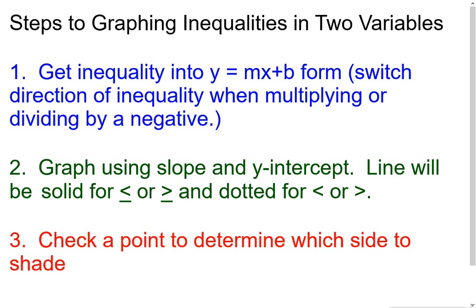Now for graphing inequalities. The beginning is similar to graphing a line. Step one: get the inequality into slope-intercept form to identify the y-intercept and slope. Step two: the inequality symbol determines whether the line is solid or dashed. A ≤ or ≥ gives a solid line; a strict < or > gives a dashed line.